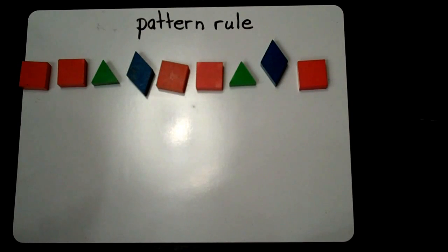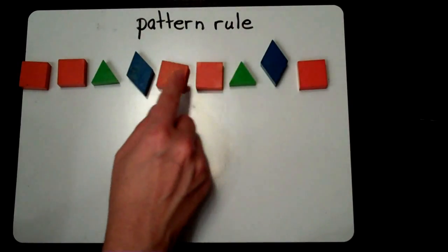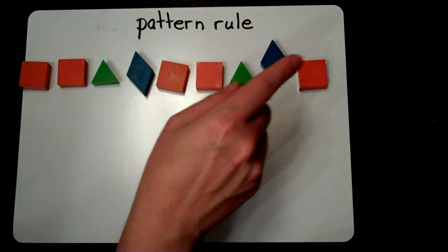The pattern core is the smallest part of a pattern to repeat. This pattern goes orange, orange, green, blue, orange, orange, green, blue, orange.